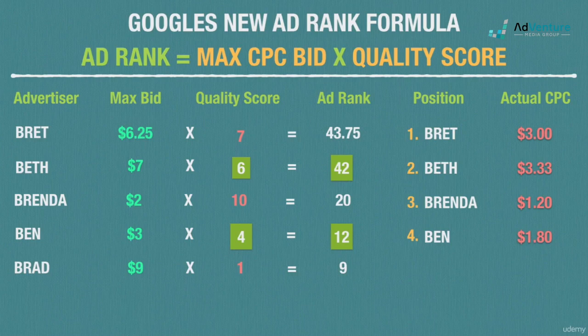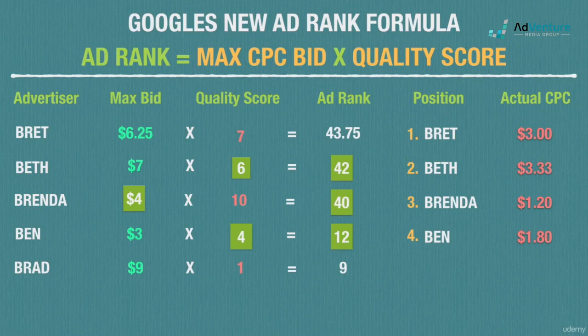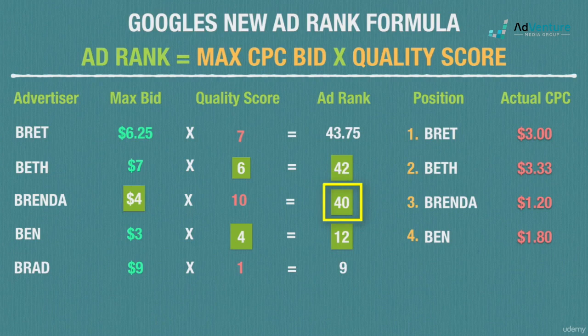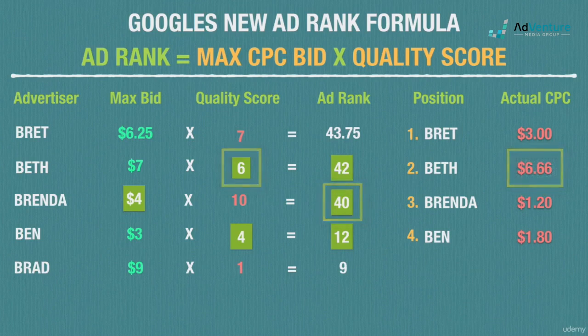What if Brenda wants to move up? She already has a 10 quality score, so she could raise her max CPC bid. Say she raises it to $4 — doubling it. Her ad rank jumps to 40, but she's still in position 3, and she still pays just $1.20 a click, because that's all she needs to beat Ben. But something else happens: Beth could no longer just pay $3.33 to beat Brenda. Now dividing Brenda's new ad rank of 40 by Beth's quality score of 6, Beth's actual CPC jumps back up to $6.66.